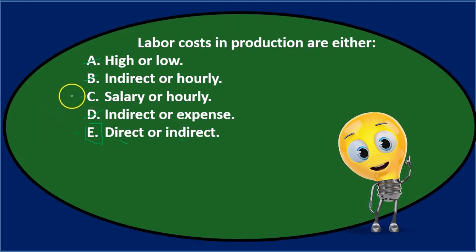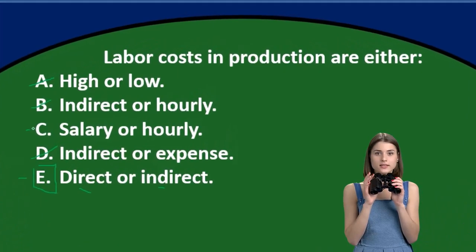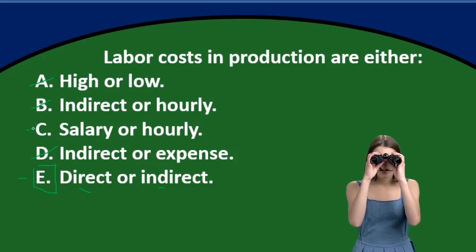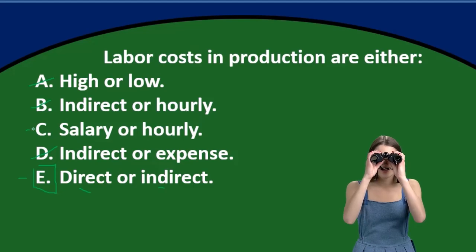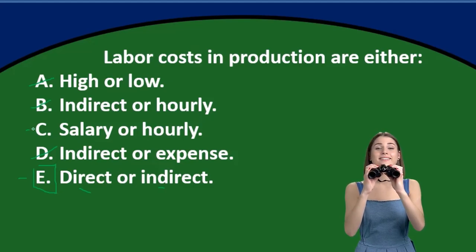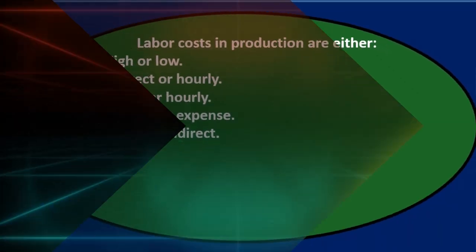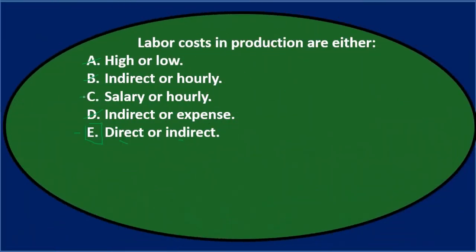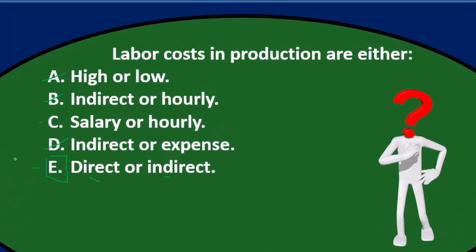And this is one where you might see option C and say it's not technically wrong, because we can have different kinds of payroll. But many multiple choice questions ask for the most correct answer — the one that fits the topic best. Since we're discussing cost of production, direct or indirect labor is the most fitting answer, so go with E.